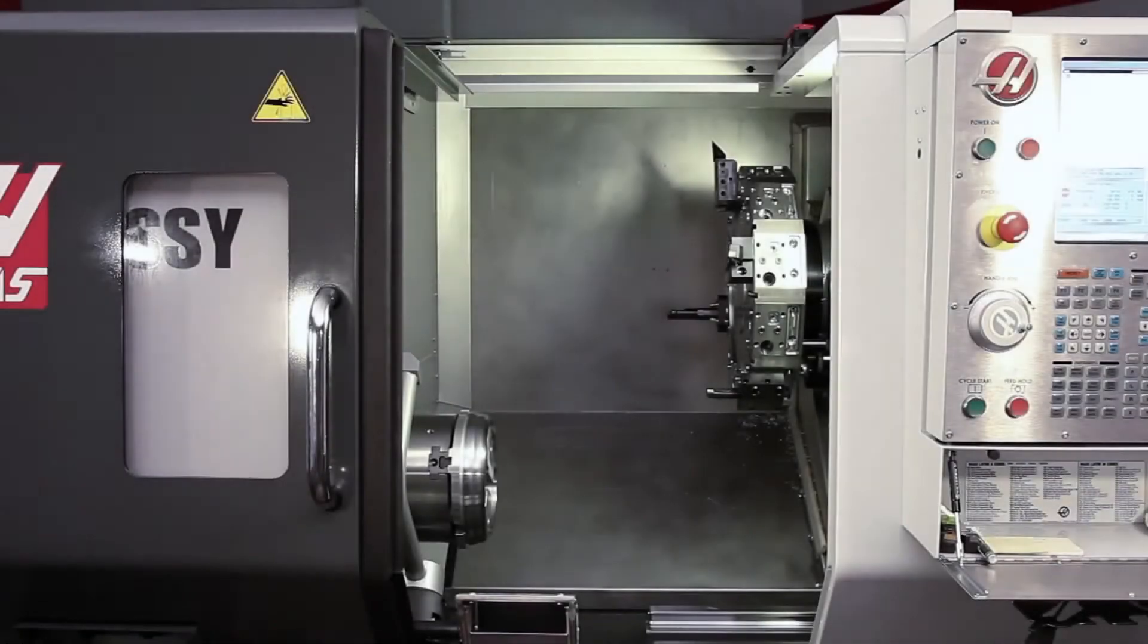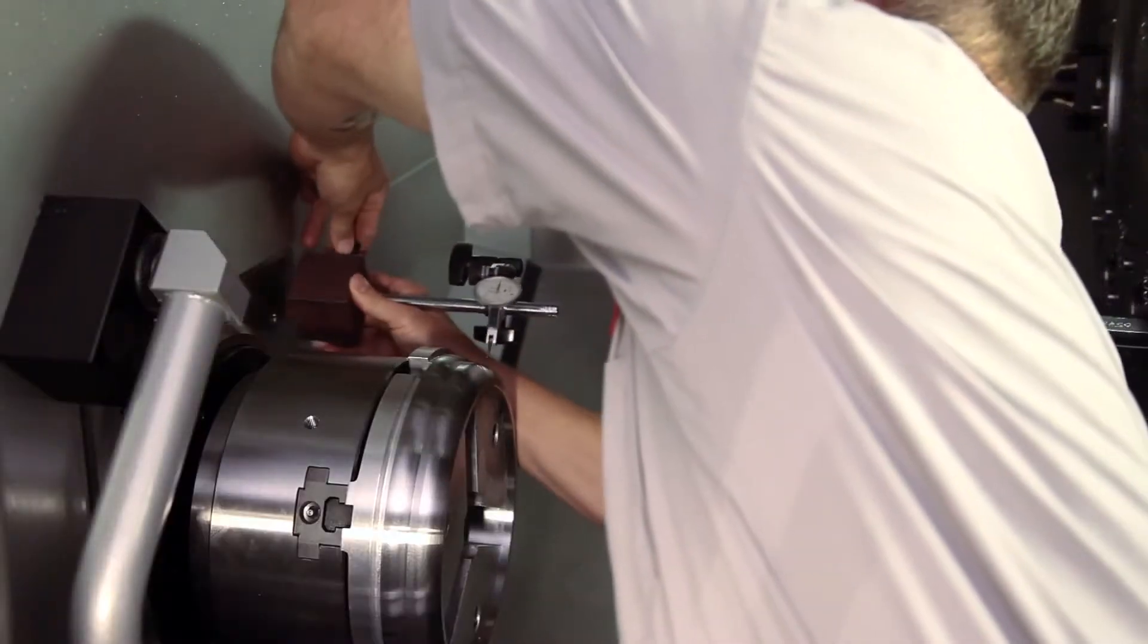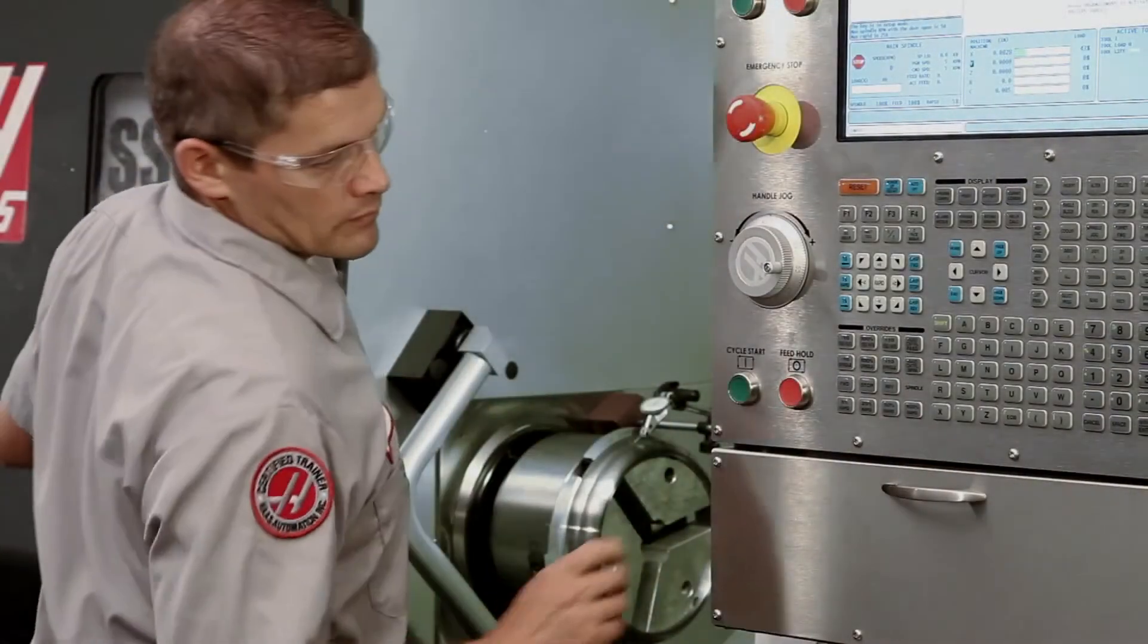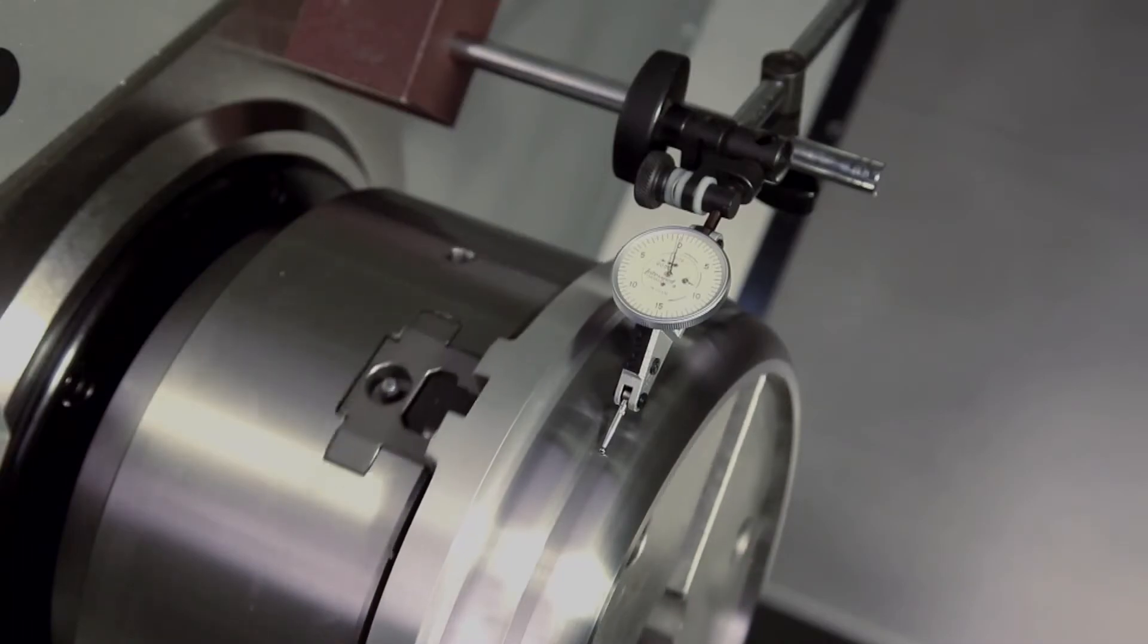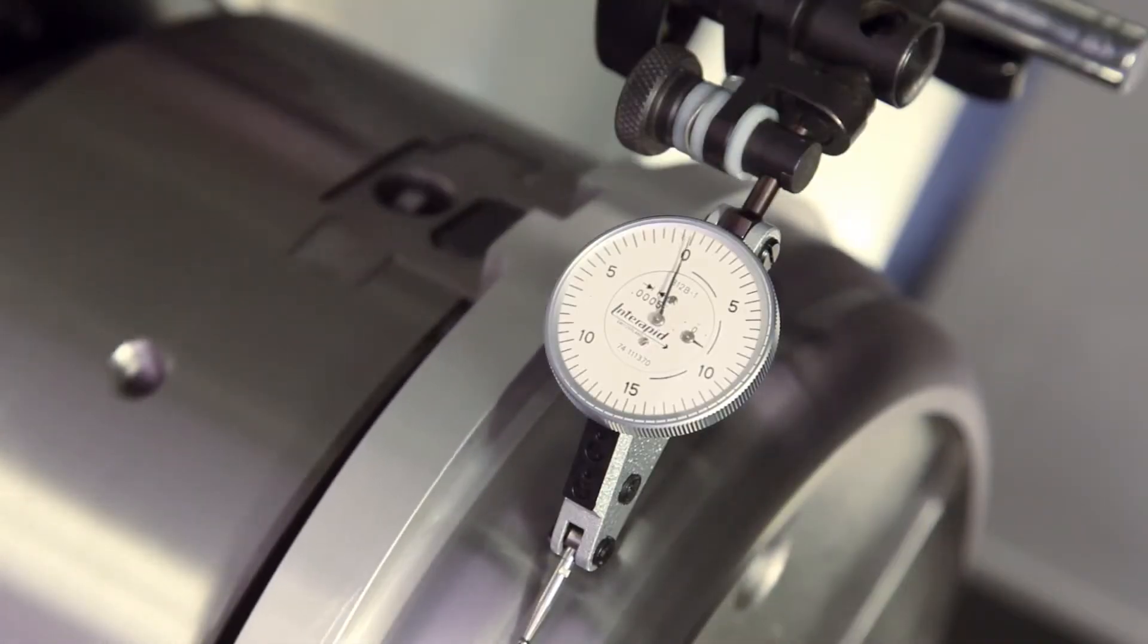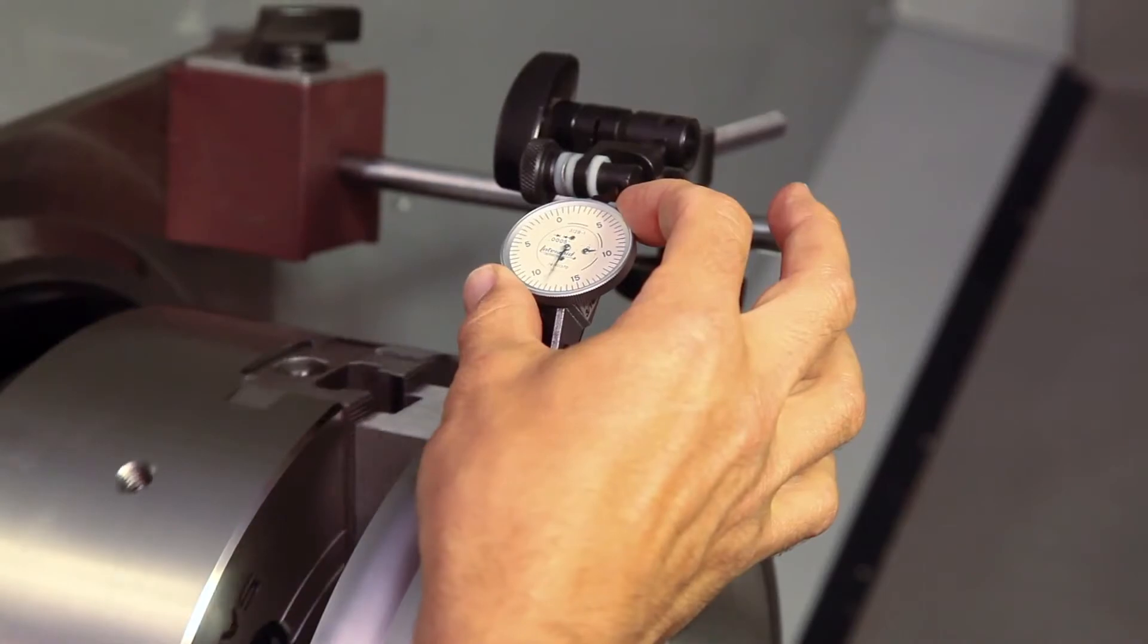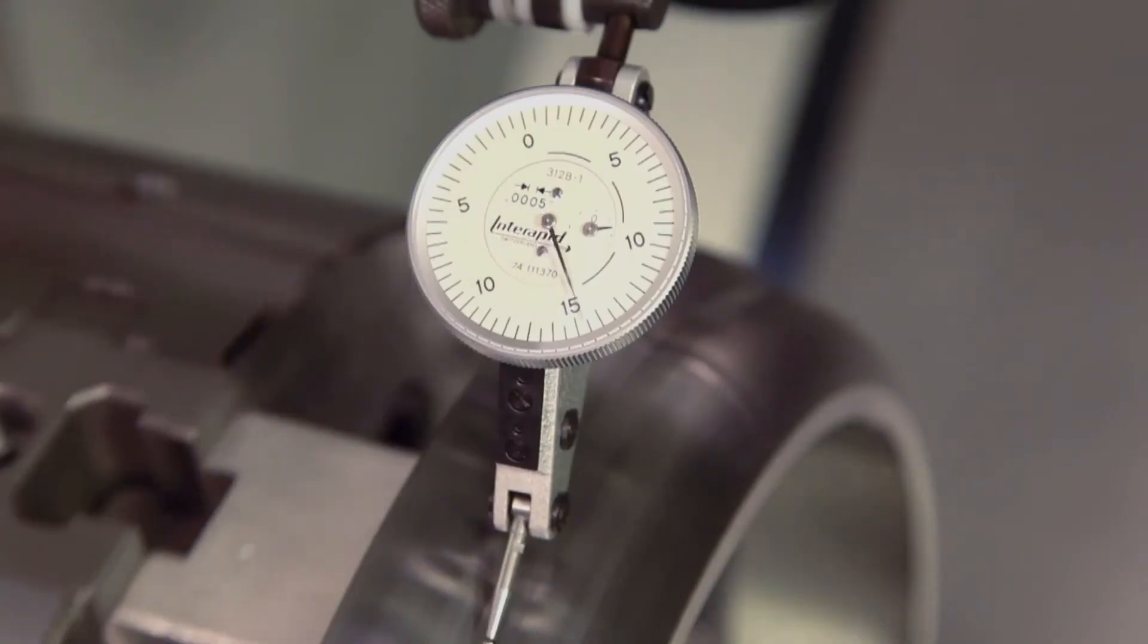To demonstrate how uniformly the pie jaws grip the part, Andrew mounts an indicator to check how much run-out we have with our part gripped in these jaws. At 250 PSI clamp pressure, our part's total indicated run-out using the pie jaws is 5 to 10 thousandths. In contrast, with a standard set of soft jaws cut to grip this part, we see a total indicator run-out of 15 thousandths at 250 PSI.